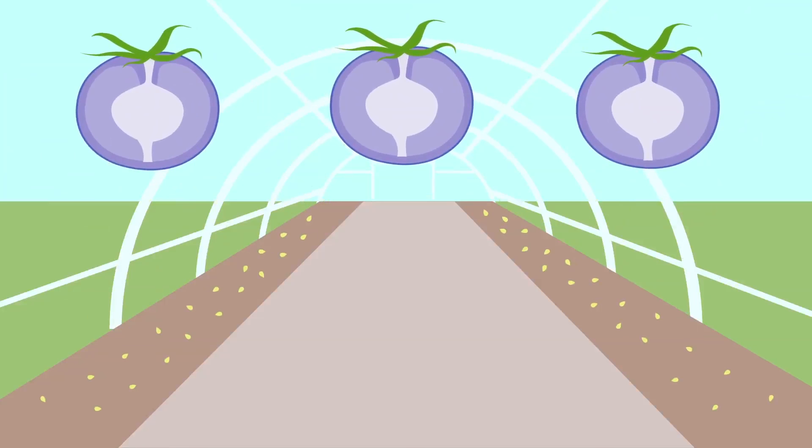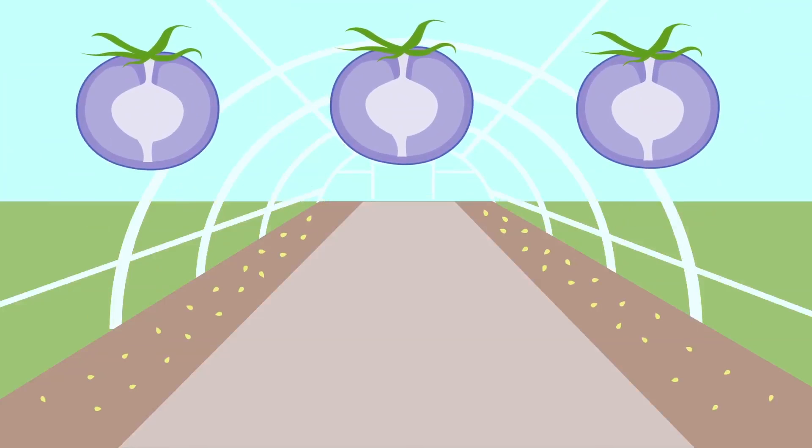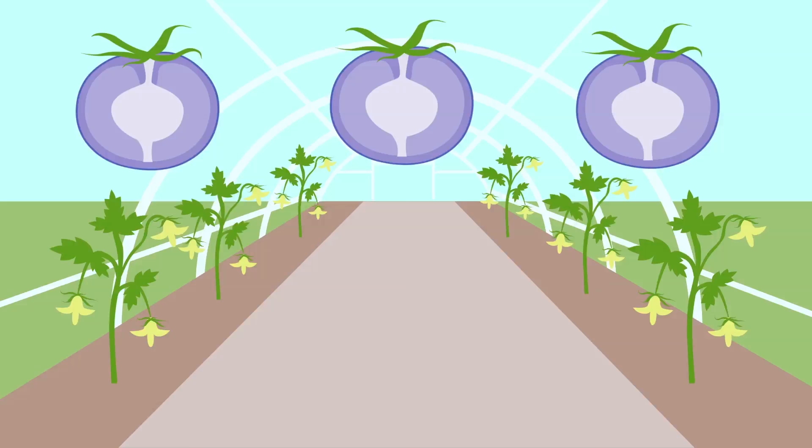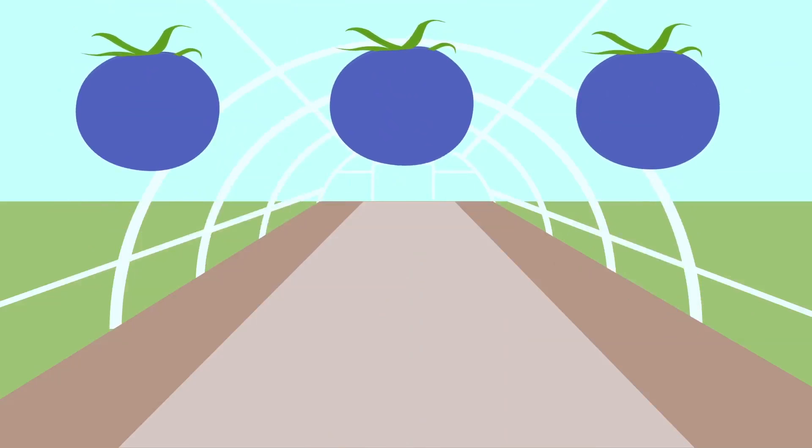Breeders will then plant the F1 seeds from the especially blue tomatoes, and those tomatoes are pollinated the natural way, without human interference. What grows is called F2, the second generation. Breeders will pick the bluest tomatoes of that batch and plant them.